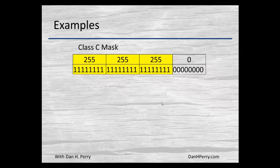The default Class C mask is 255.255.255.0 — with ones in the first 24 bits indicating the network portion. If you have looked at your TCP/IP settings for your systems at home, this is probably the subnet mask you'll see.